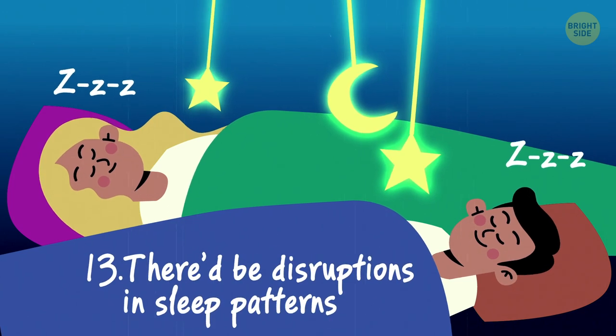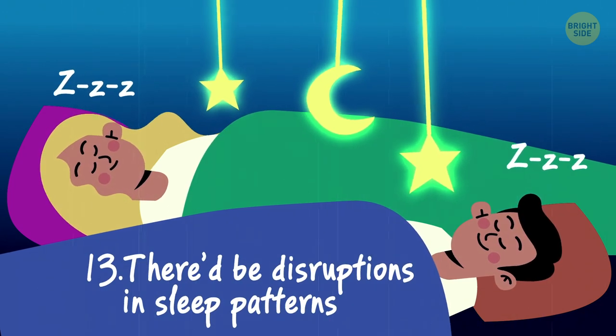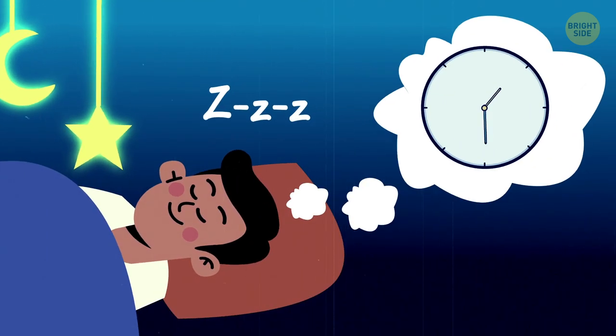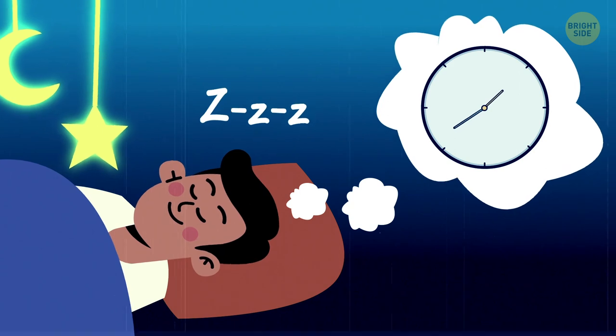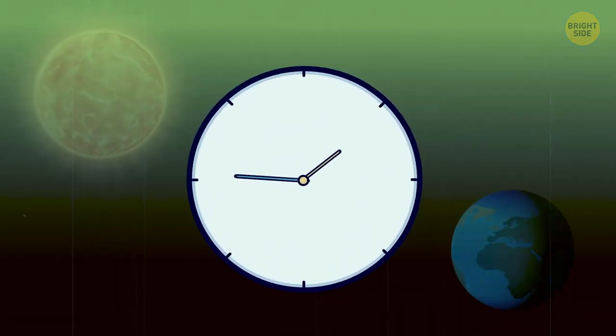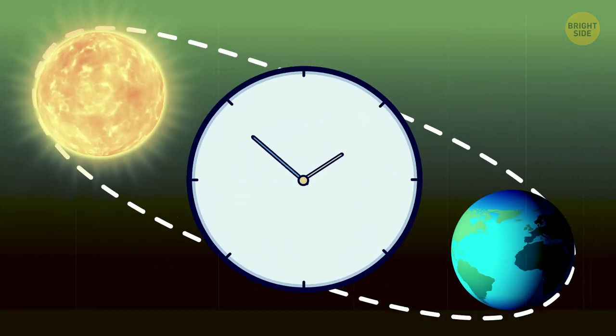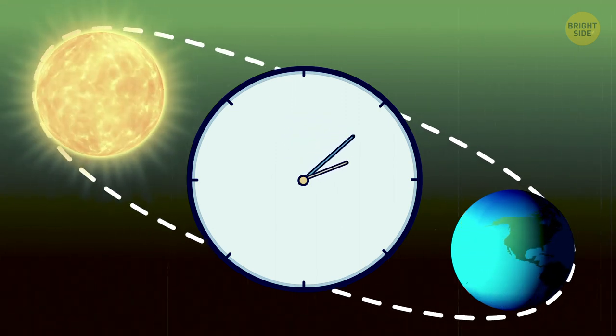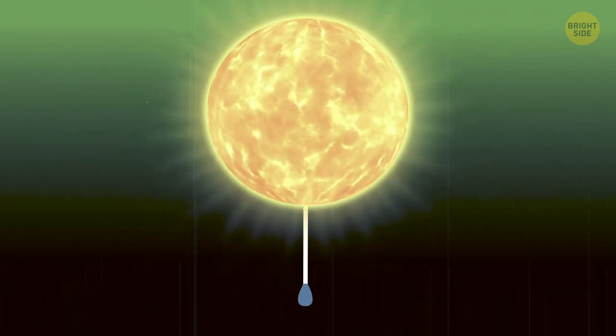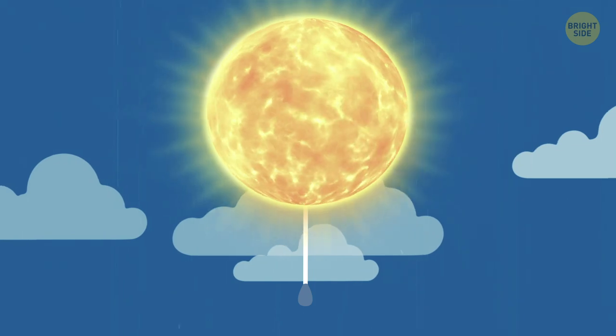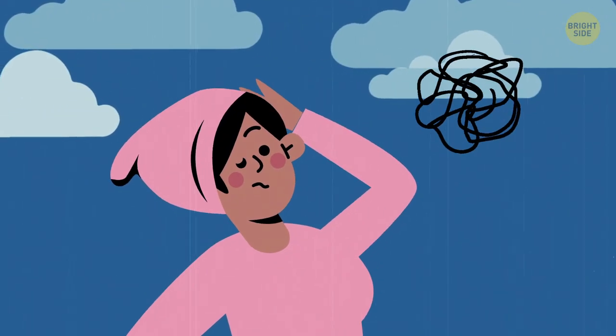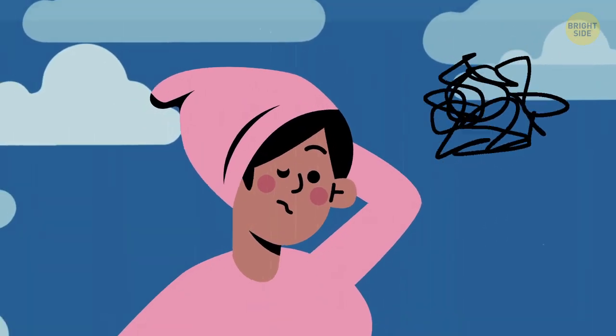Thirteen: There'd be disruptions in sleep patterns. Humans, and many other mammals, have internal biological clocks that tell us when it's time to sleep and when it's time to be awake. If a place experiences a change in the amount of sunlight it gets, those that live there may see malfunctions in their biological clocks. There's one simple rule – we know we're supposed to sleep when it's dark and be awake when it's daylight. If the sun was no longer on a tilt, some regions may see increased daylight hours or nighttime hours, messing with our ability to sleep.